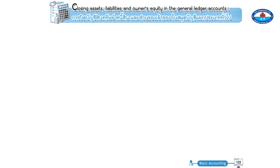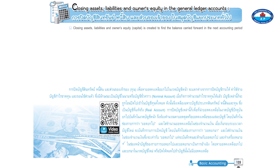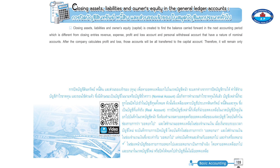Page 135: closing assets, liabilities, and owners' equity in the general ledger accounts. Capital was created to find the balance carried forward into the next accounting period, which is different from closing entries. Revenue, expense, profit and loss accounts, and personal withdrawal accounts have a nature of nominal accounts. After the company calculates profit and loss, those accounts will all be transferred to the capital account.